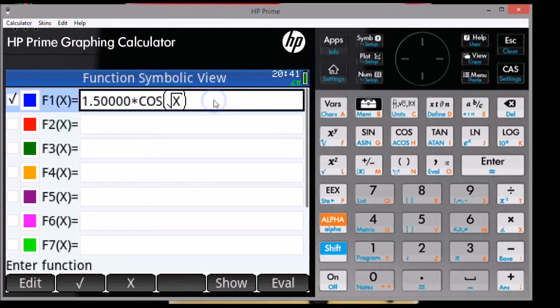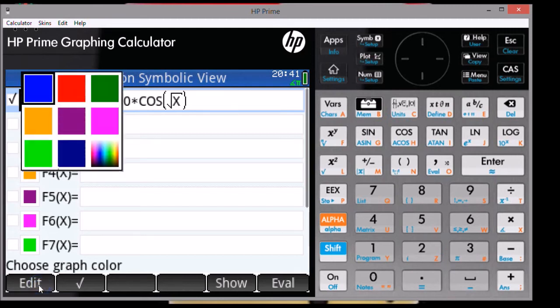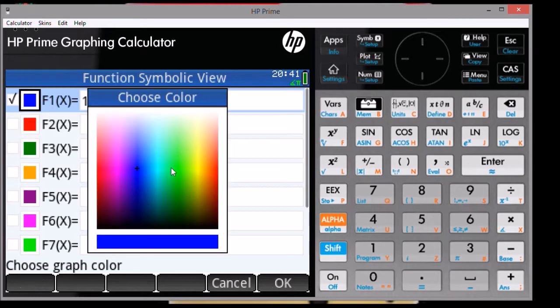Press the soft key OK, and the function is entered. An optional step is you can change the color of the function by pressing this box. It will say choose graph color, hit the soft button choose, and you can choose from any number of colors. I'm going to choose darker blue for this example.